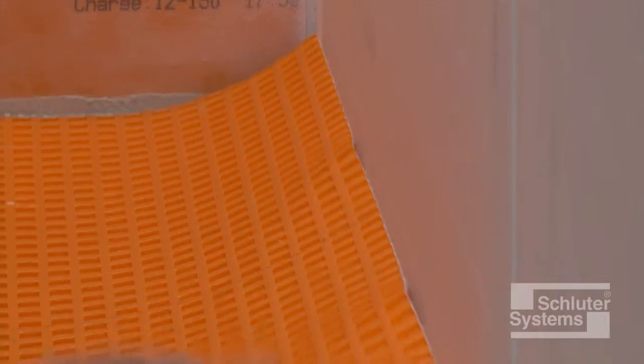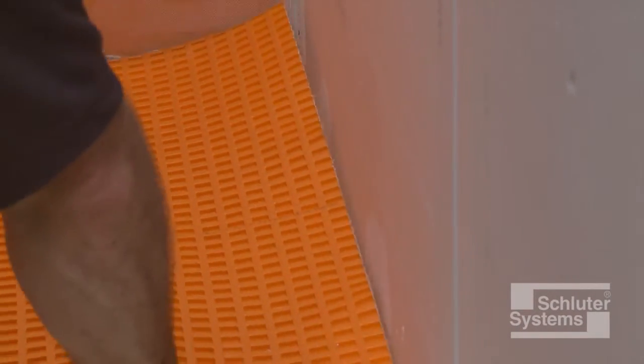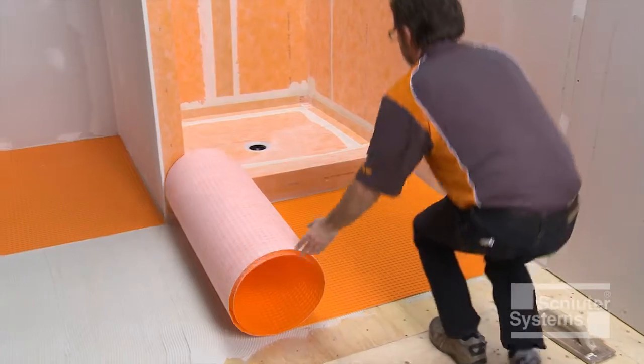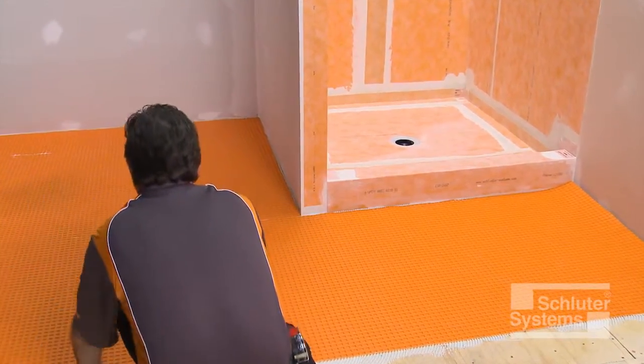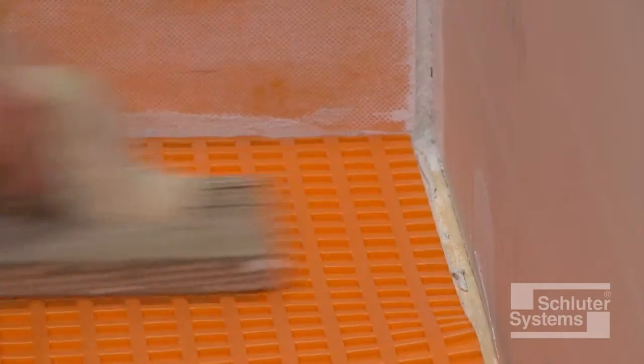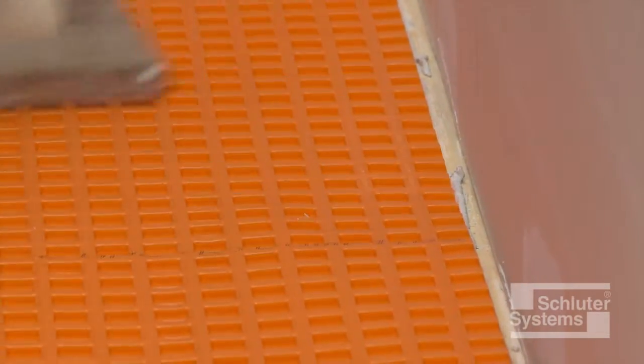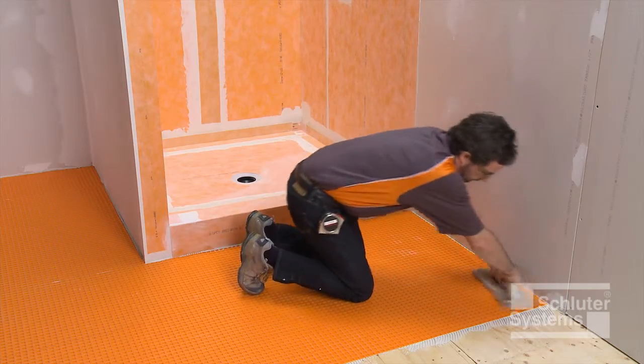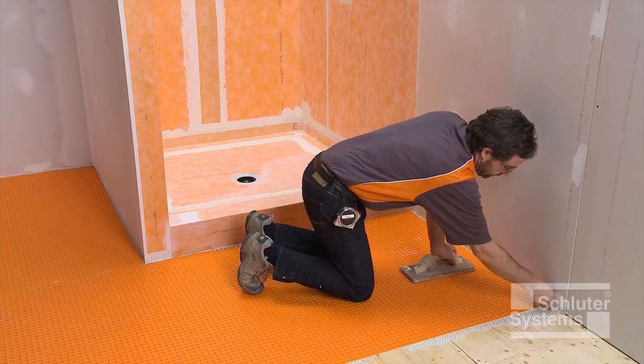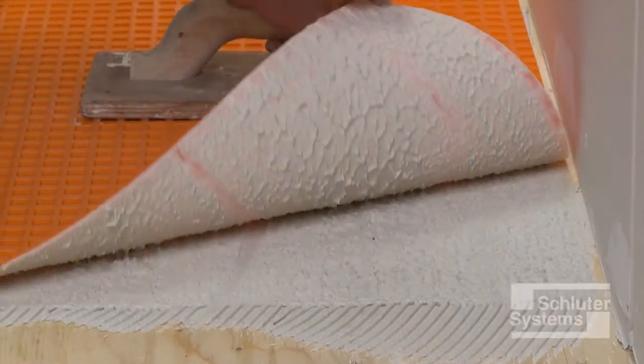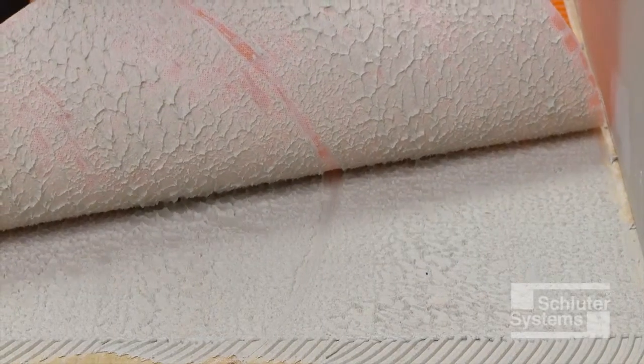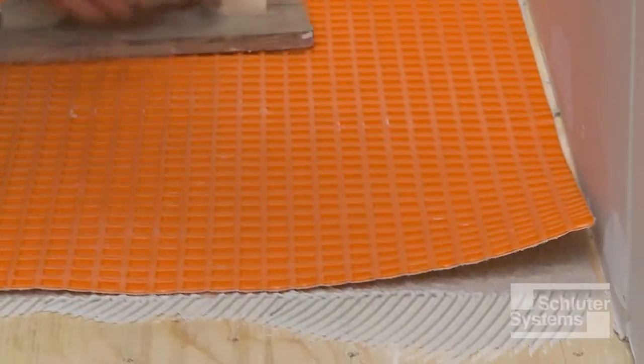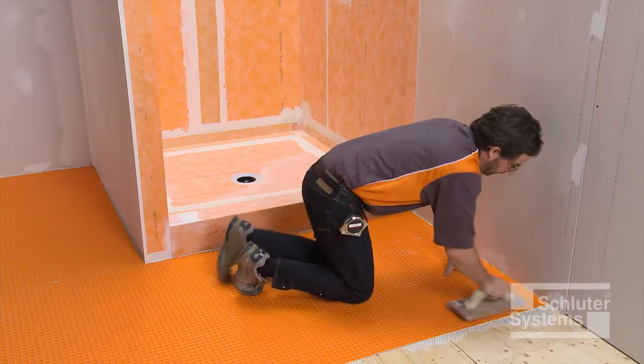Apply the DITRA fleece side down and solidly embed in the mortar using a float. Lift up a corner of the matting to check coverage. Proper installation results in full contact between the fleece webbing and the thin-set mortar. Re-embed the matting.